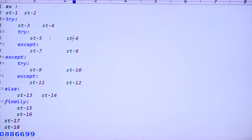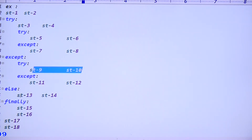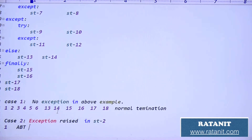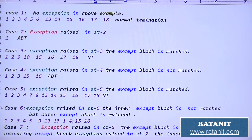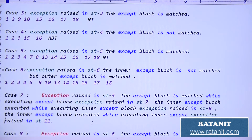Final output for case six: up to five is executed, exception in statement six, then 9 and 10 (outer except), then 13 and 14 (outer else - no exception in outer try), then 15 and 16 (finally block), then 17 and 18 (rest of application). Normal termination. Cases 7 and 8 are bigger cases but the examples are simple.